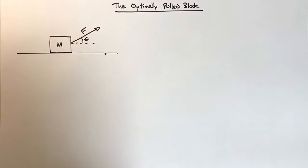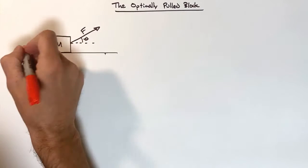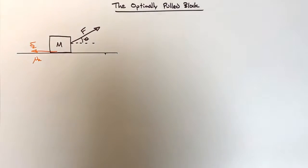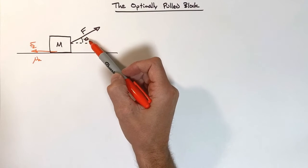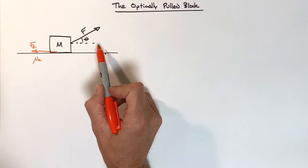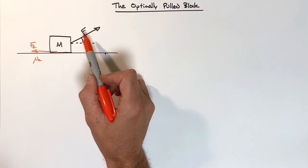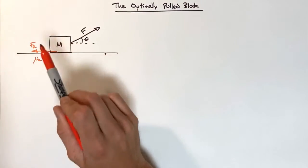At first you might think we just pull horizontally — pulling horizontally maximizes the force in the x-direction and therefore maximizes the acceleration. That is true, except we're going to include friction here — kinetic friction between the block and the ground. We're talking about once the block is already moving. By pulling slightly upward we can affect the vertical forces, and while that doesn't seem like it'll obviously affect the acceleration, it will.